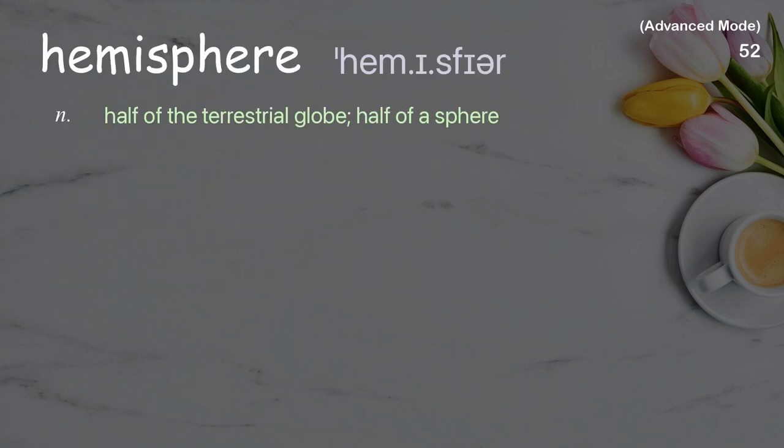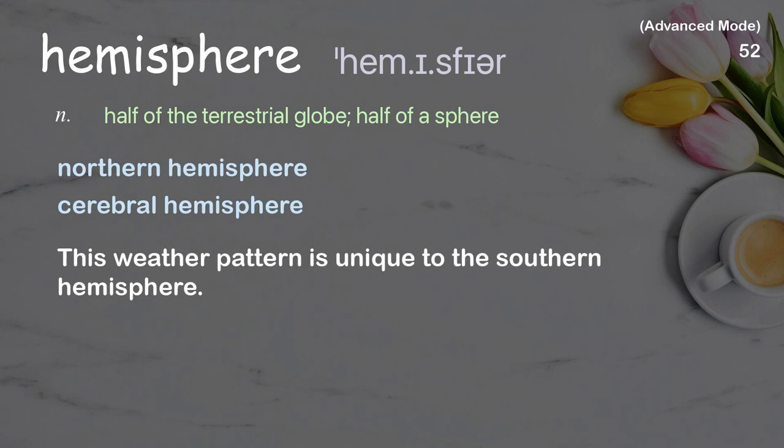Hemisphere: half of the terrestrial globe, half of a sphere. Examples: Northern Hemisphere, cerebral hemisphere. This weather pattern is unique to the Southern Hemisphere.